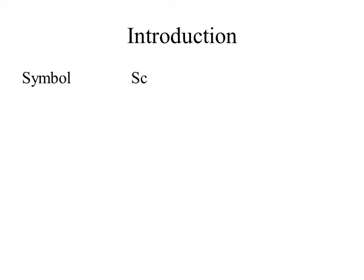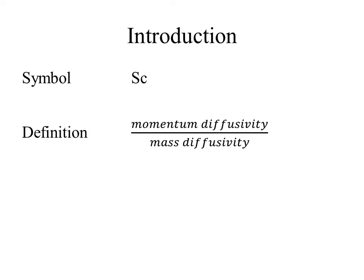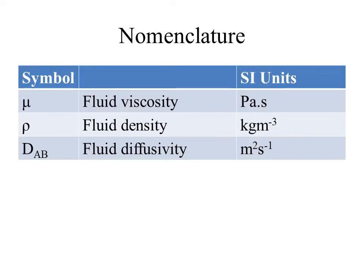It is denoted as Sc and can be defined as the ratio of momentum diffusivity to mass diffusivity. It can be formulated as Sc equals mu by rho D_AB, where mu is the fluid viscosity, rho the fluid density, and D_AB is the fluid diffusivity.